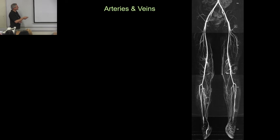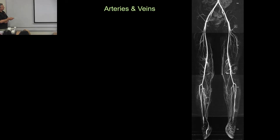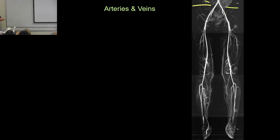The blood vessels for the lower limb start with the aorta in the abdomen. The aorta is the main blood vessel in the body, fed directly from the left ventricle of the heart. The aorta finally terminates at the bifurcation, splitting into the left and right common iliacs.